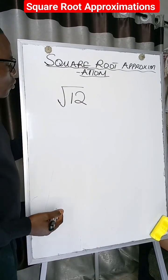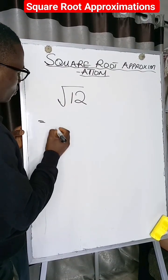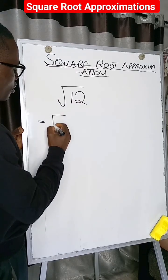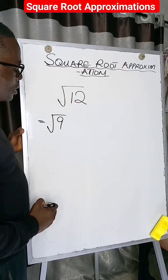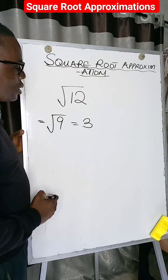To approximate the square root of 12, all we need to do is look for the closest perfect square, which is 9. And the square root of 9 is 3.